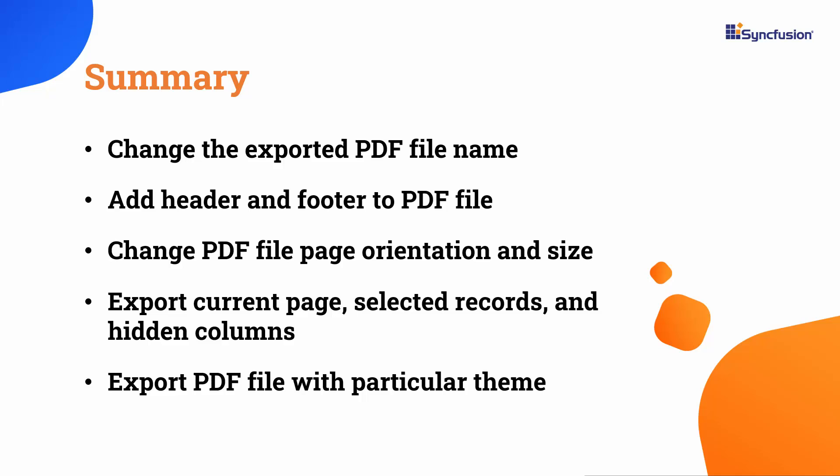Now let me summarize. I showed you how to export a Syncfusion Blazor DataGrid to a PDF document. I also demonstrated various customization options, such as adding a custom file name for the exported PDF, adding a header or footer, changing the orientation, adjusting the page size, exporting the current page, hidden columns, selected records, and customizing column width and cell appearance. If you want to see the working code of this example, you can download it from the GitHub link in the description below. I've also provided a link to see if you qualify for a free community license to use all our Blazor products. If you find this video useful, don't forget to click the like button and subscribe to our channel to watch more videos like this. Thanks for watching.